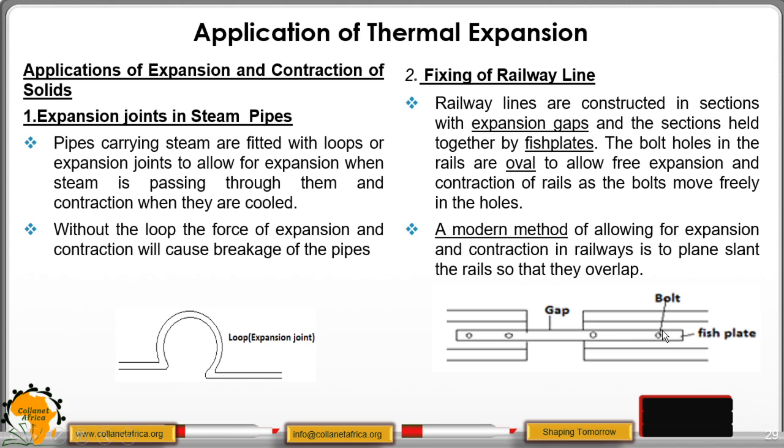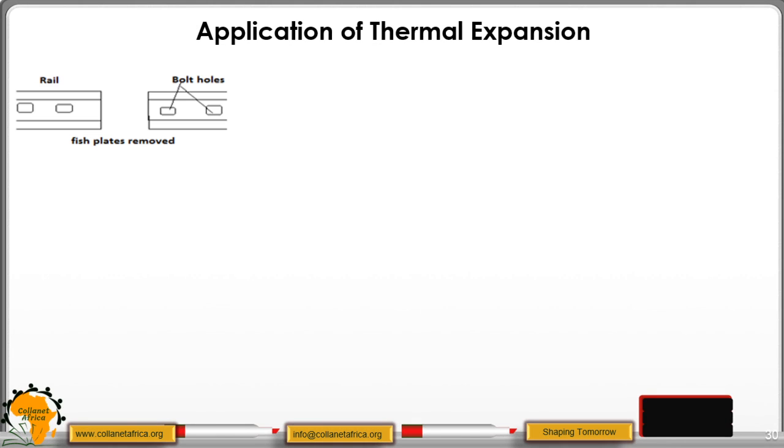Let us look at our diagram here. We are saying that these bolt holes are oval. These are the fish plates. So these bolts can move freely here, and this is the gap. This gap is connected by what we are calling the fish plates. These holes are oval so that the bolt can move freely, and this will give us room for expansion. In our next diagram, in our modern ways, these layers are overlapping, and this gap will give us room for expansion.